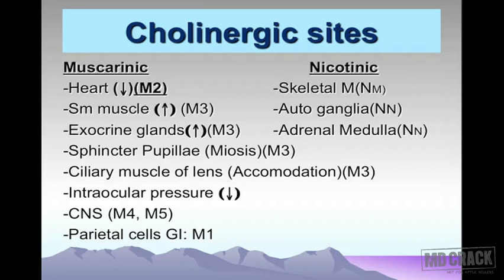Moving to nicotinic receptor sites: the important site is the skeletal neuromuscular junction. Because it's a muscle, it's designated Nm — N for nicotinic, m for muscle. Autonomic ganglia and the adrenal medulla are also nicotinic sites, designated Nn — double N. So nicotinic receptor sites include the skeletal neuromuscular junction, autonomic ganglia, and adrenal medulla.